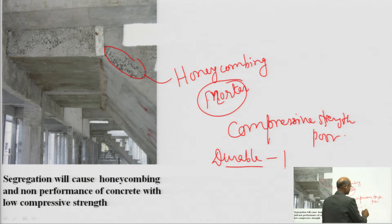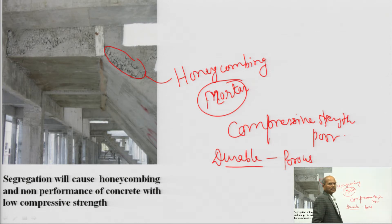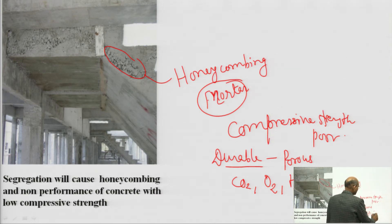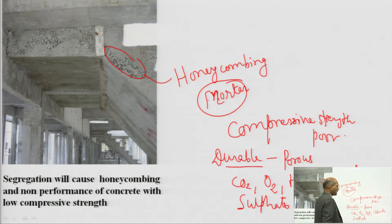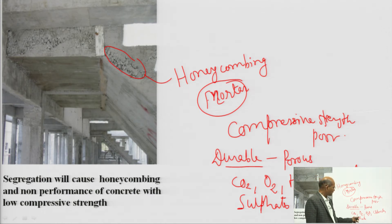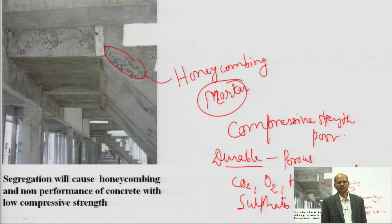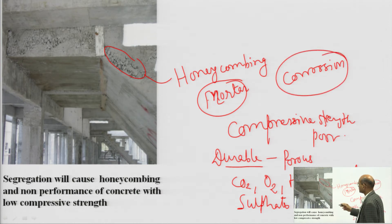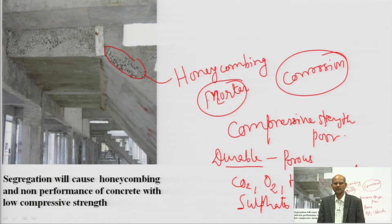The concrete becomes porous, and porous concrete is permeable. Permeable concrete gives access to carbon dioxide, oxygen, moisture, chloride, sulfate, and other harmful substances inside the concrete. If it is reinforced cement concrete or pre-stressed concrete, this is going to cause corrosion. If corrosion takes place, the structure intended to last 100 years may collapse within 5 years of construction or even less. We must ensure good quality concrete.